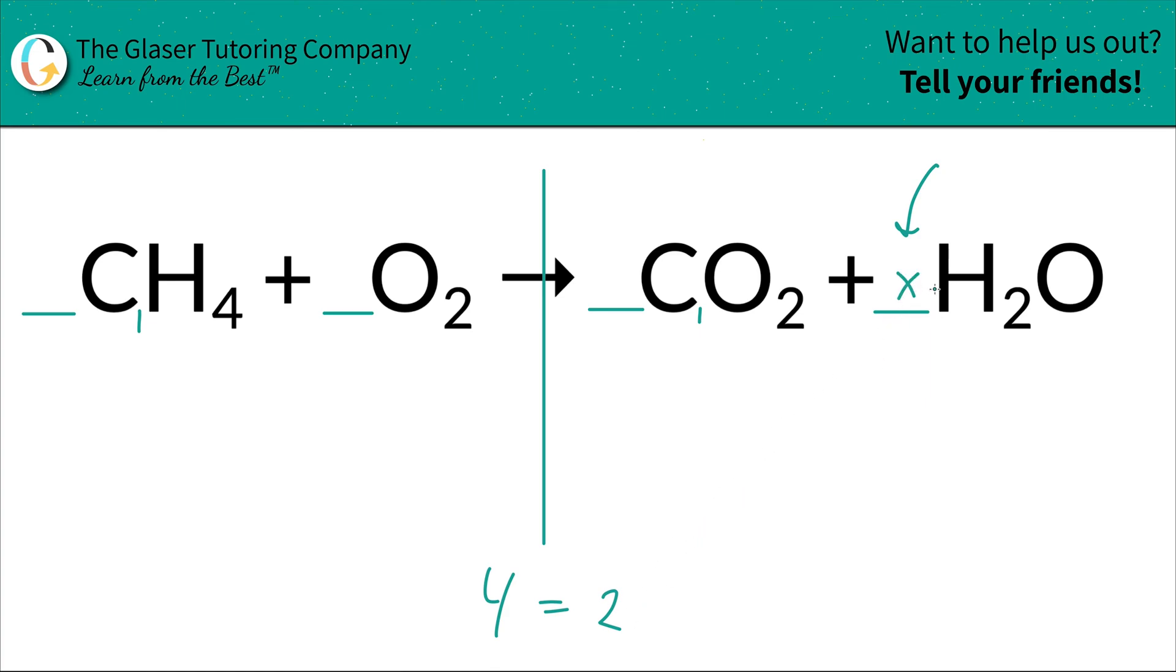So basically what you're going to do is you're going to take this X here and you're going to place it right next to the two here in your equation, because you're really asking yourself what number times two will give me a total of four. This is the math that goes along with it. So I think you can plainly see that X here should be two. So simply just go back, erase the X, and just plug in the two. That's it.